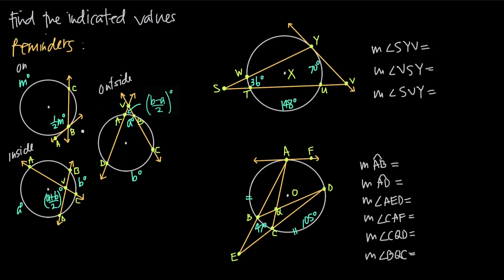We call that point of intersection the vertex — the vertex of the angle formed by the two lines. So think about it as: is the vertex on the circle, inside the circle, or outside the circle? Sometimes you'll learn about different situations depending on whether one or both lines is a tangent or secant line, but no matter which kinds of lines you're dealing with, the only thing that matters is where the vertex sits relative to the circle.